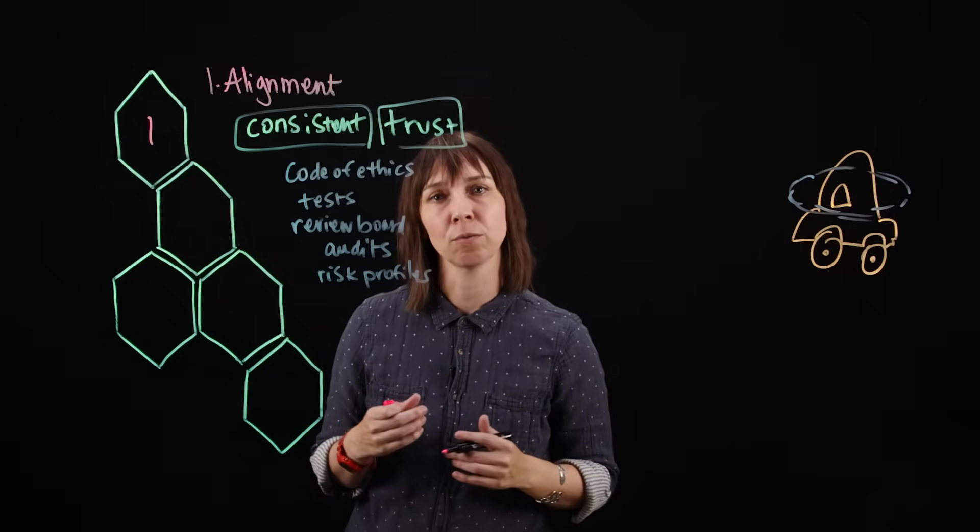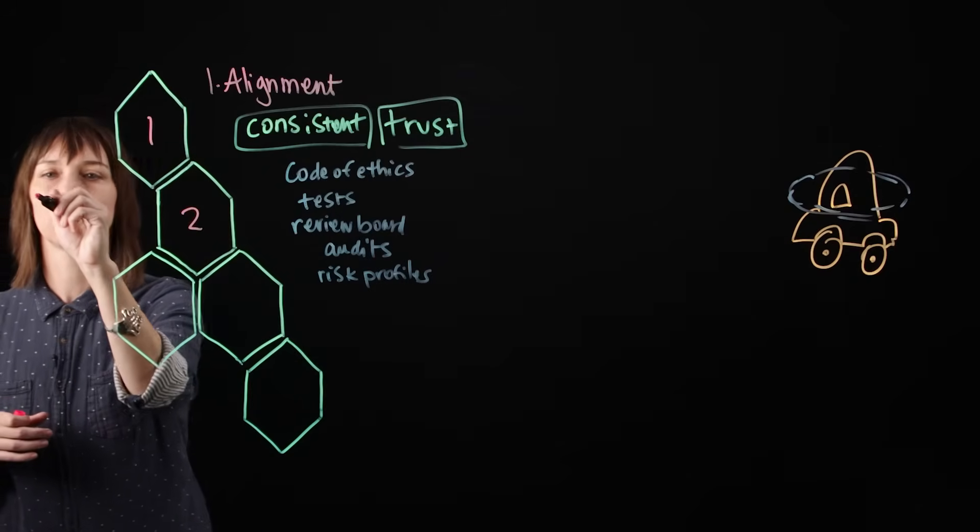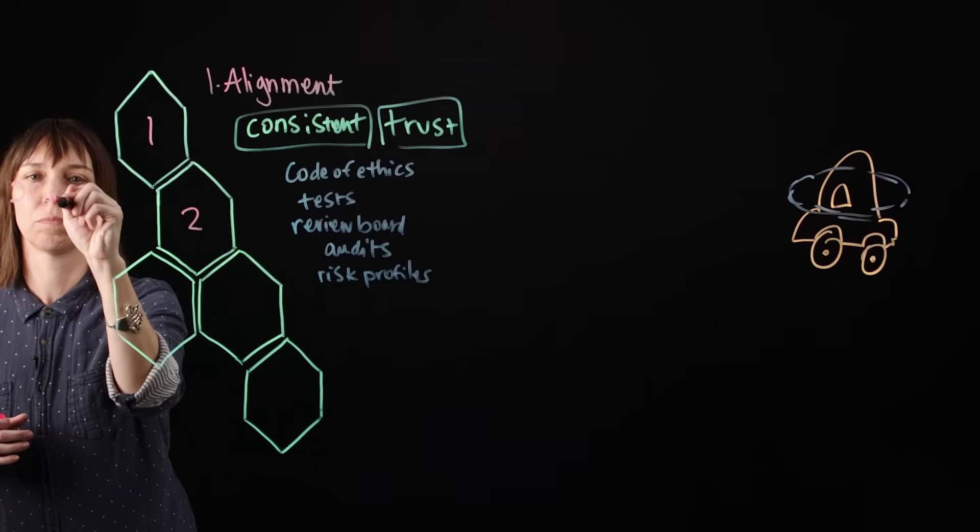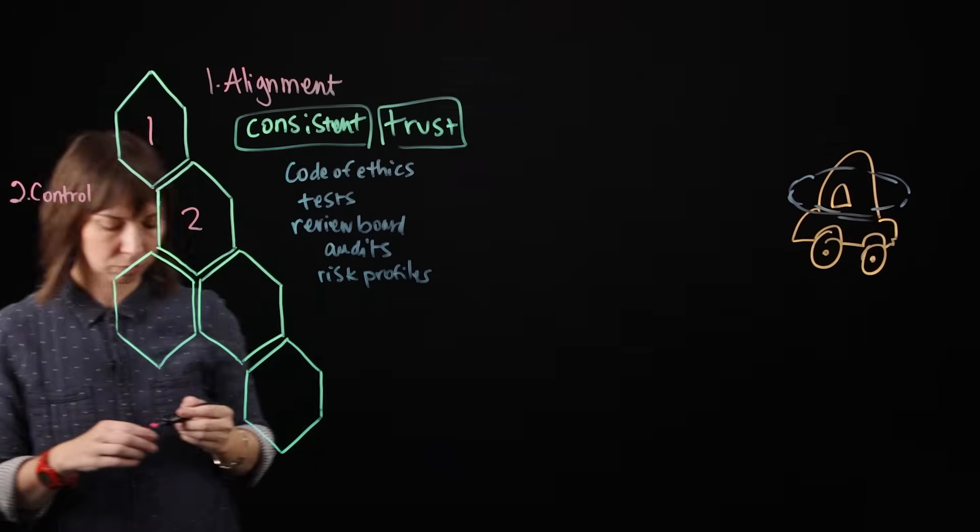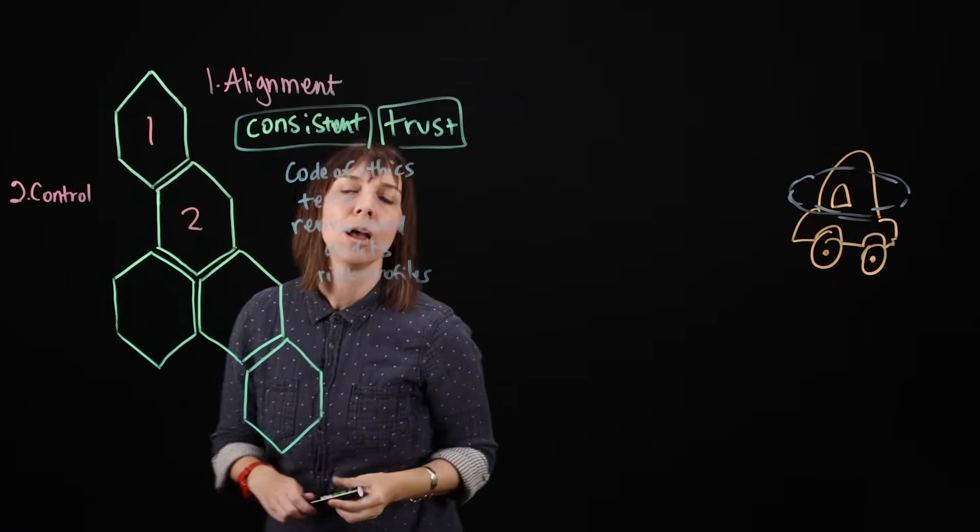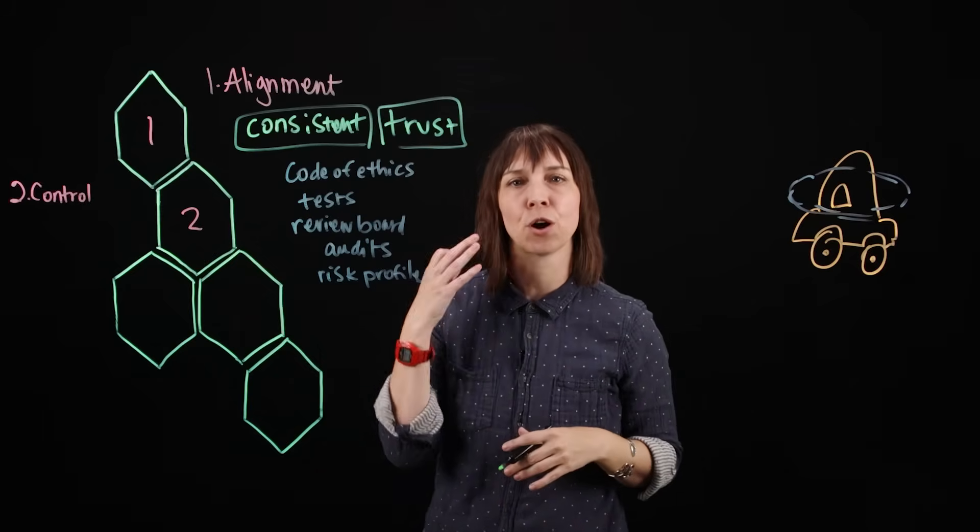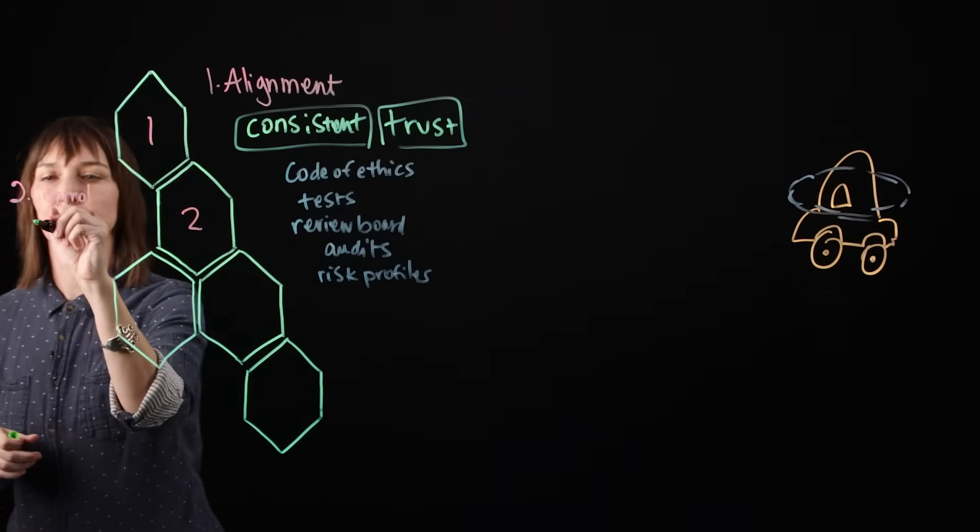Our second pillar is control. A control strategy will make sure our agents operate within predefined boundaries.